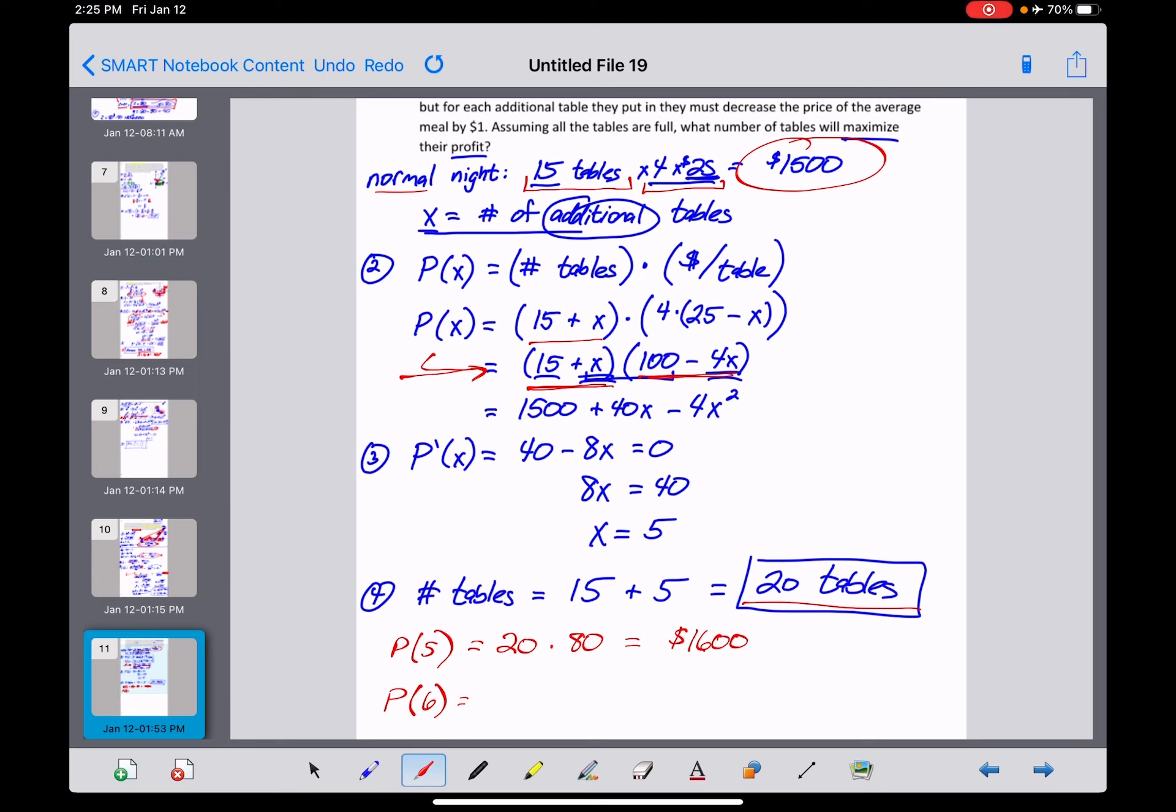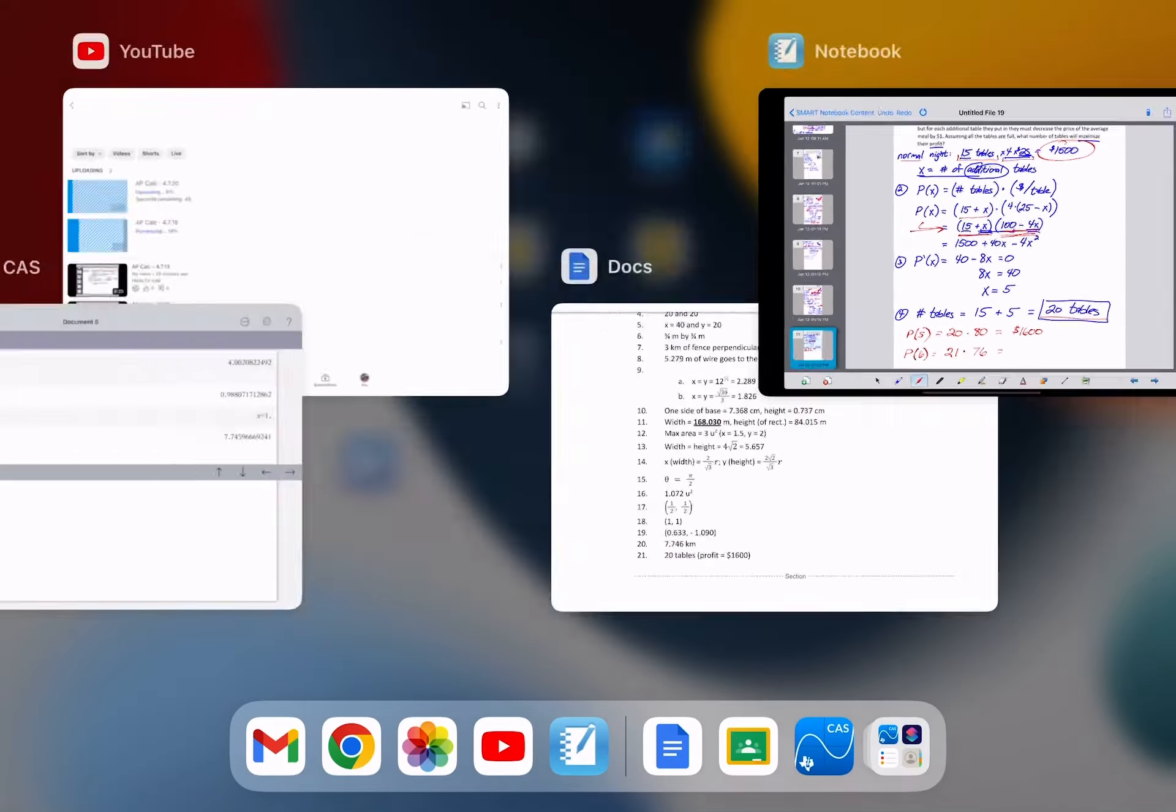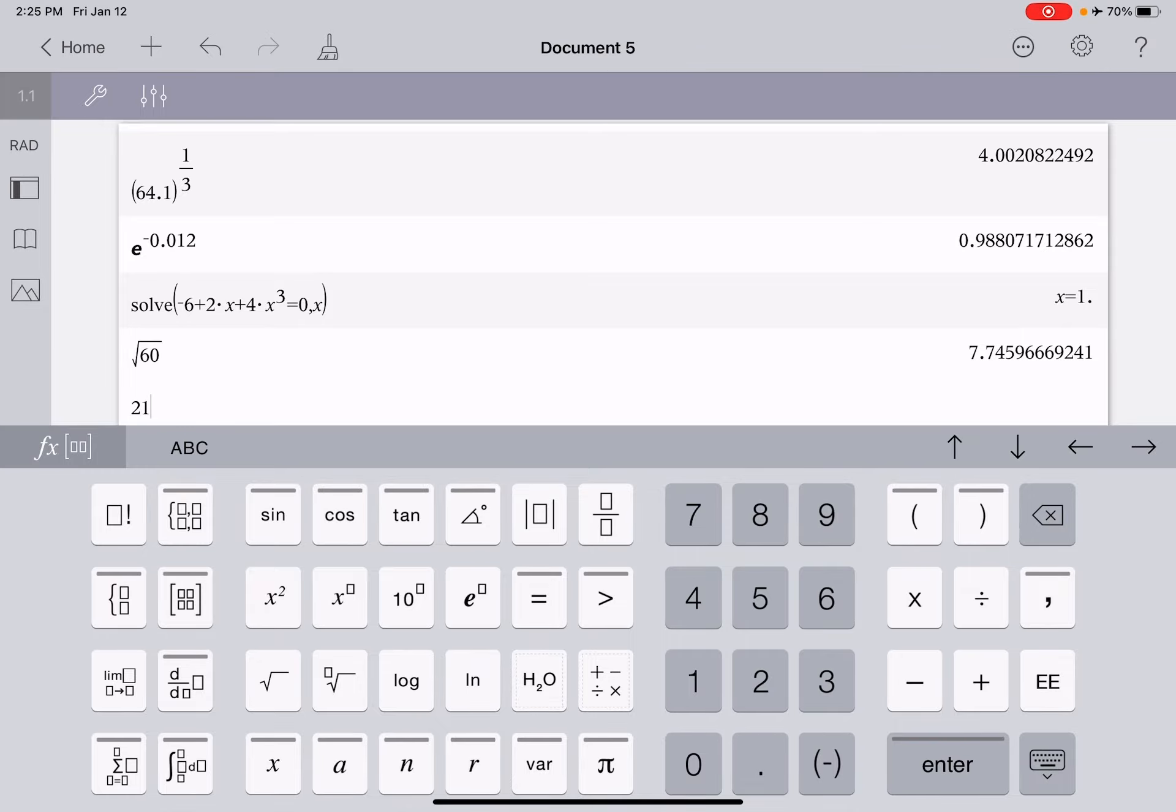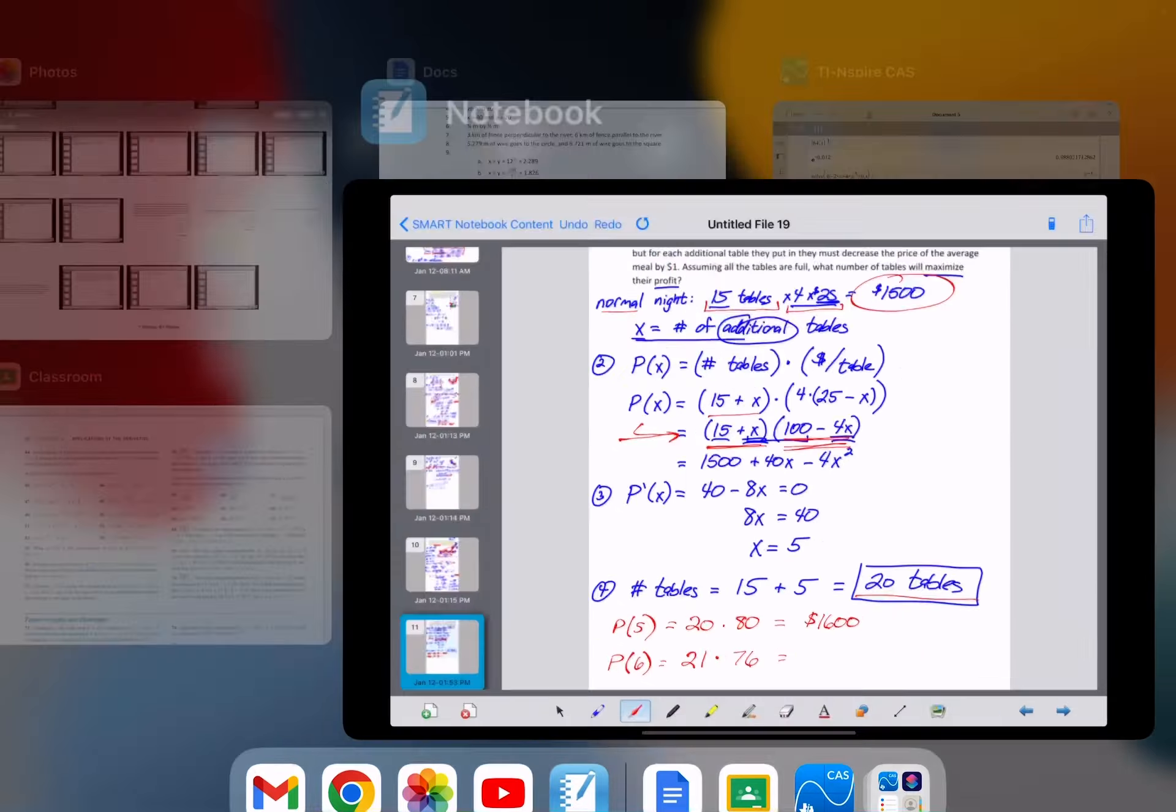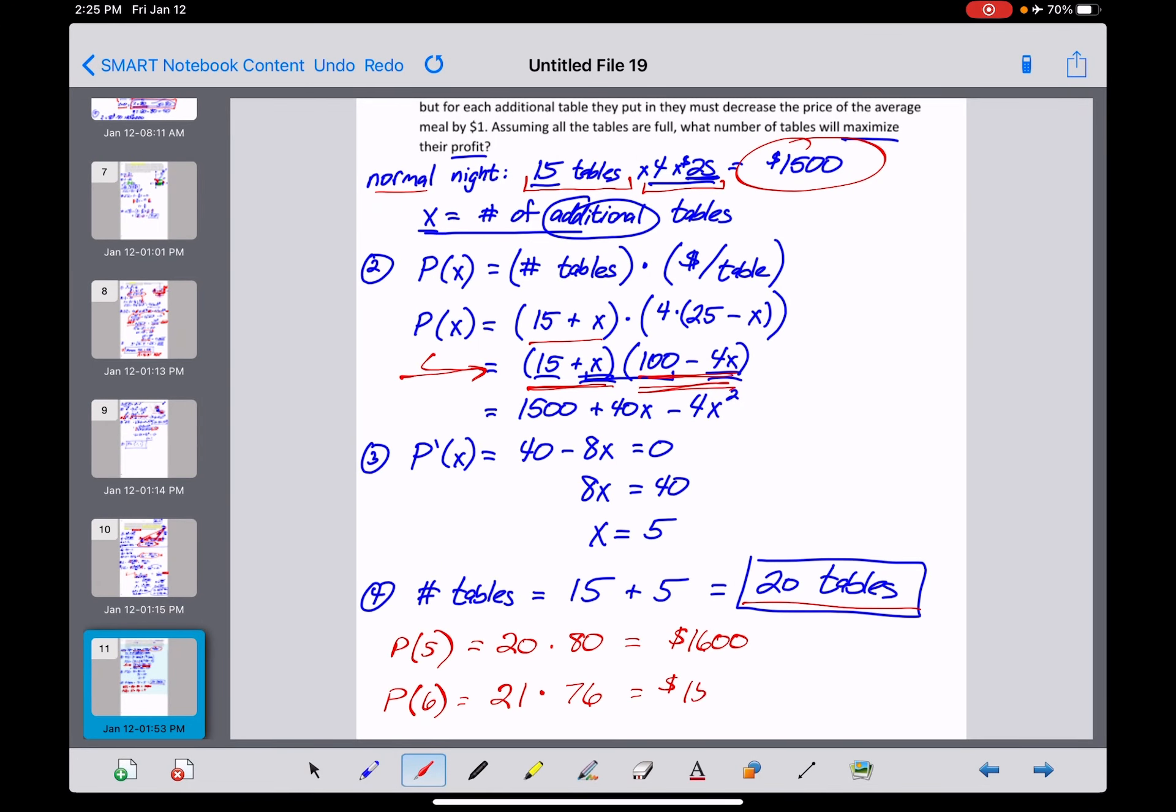15 plus 6 means now that we're going to make 21 or put 21 tables out there. But let's see. 100 minus 4 times 6. 100 minus 24 is $76 that we're making on the evening. And 21 times 76, let's see what that gets us. $1,596. That's exactly what I wanted to see. So 5 extra tables gets us this nice high profit of $1,600. But putting in 6 brought that profit margin down.